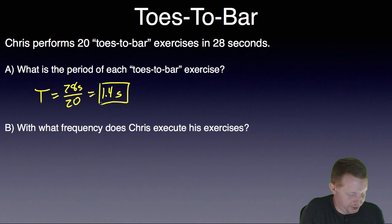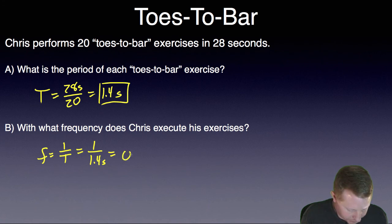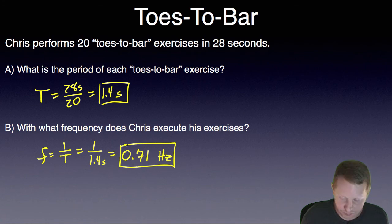If we wanted to know the frequency then, well that's the inverse of the period, 1 over the period, the number of repetitions he can do in 1 second, which will be 1 over 1.4 seconds, or 0.71 1 over seconds, which we also know as a hertz.